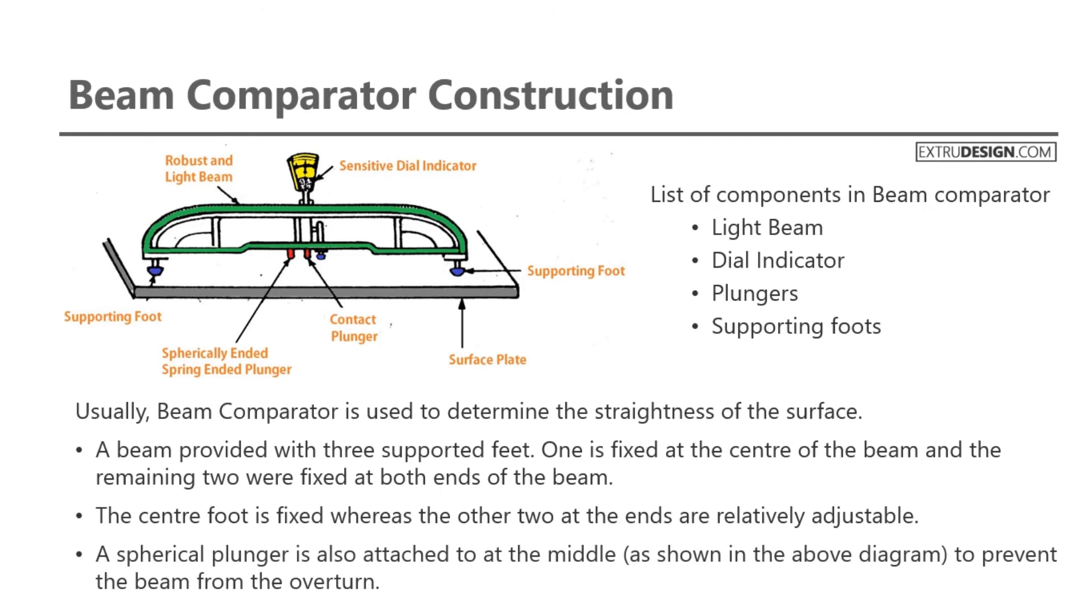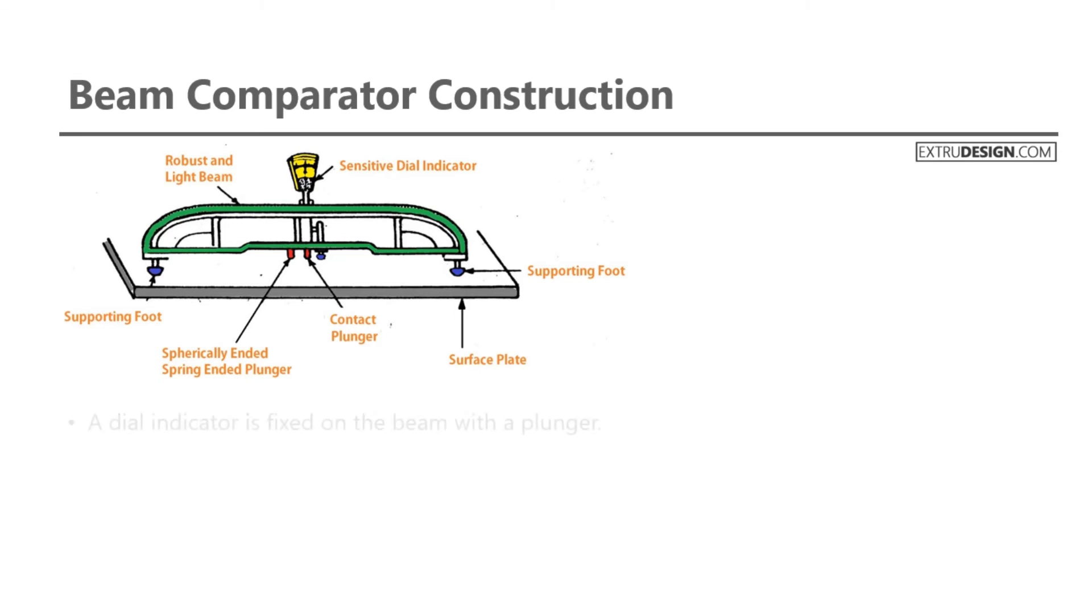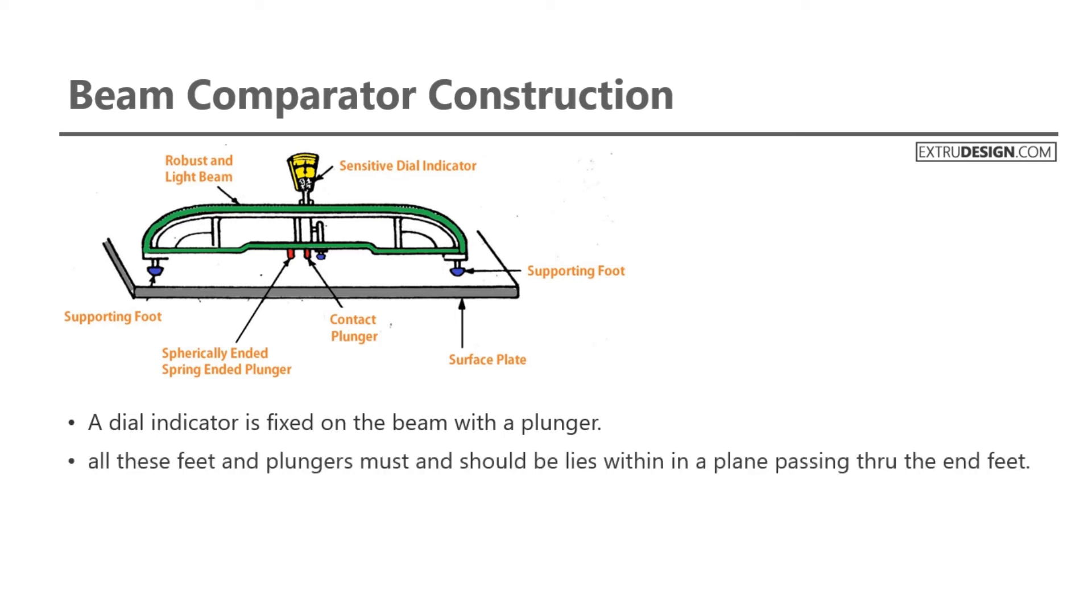A spherical plunger is also attached at the middle, as shown in the above diagram, to prevent the beam from overturning. A dial indicator is fixed on the beam with a plunger. All these feet and plungers must lie within a plane passing through the end feet.